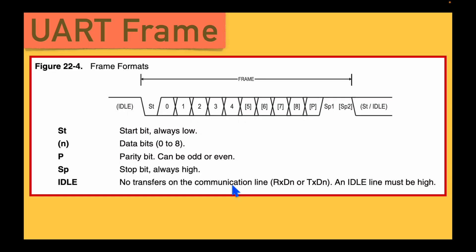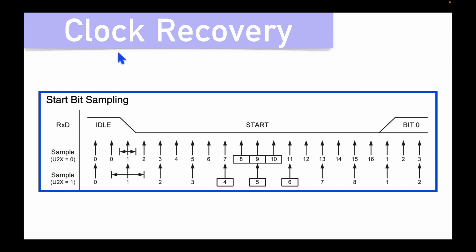In the UART frame, first is the start bit, then data bits (5 to 9), then optional parity, then one or two stop bits. The start bit is detected through sampling, which is called clock recovery — it syncs the clock. If the transmitter is sending at 115200 baud rate but the receiver is configured at 9600, the baud rates differ and an error will occur. Clock recovery handles this synchronization.